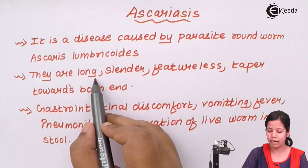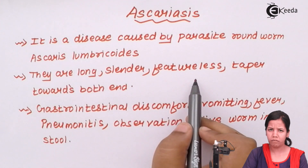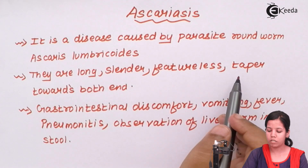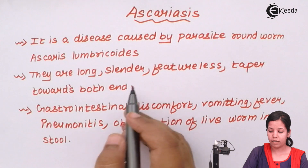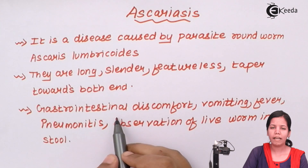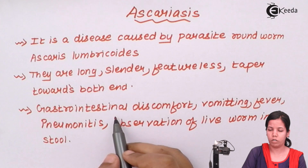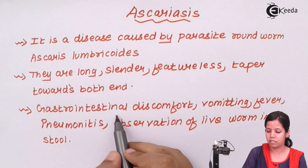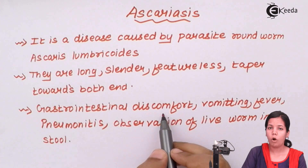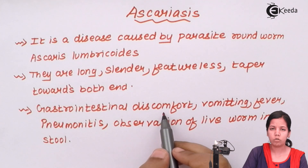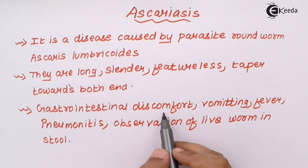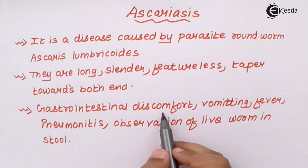These organisms are long, slender, without distinct features, and tapering towards both ends. Whenever you get an Ascaris infection, whether in young or adult individuals, the common symptoms include gastrointestinal discomfort — also termed gastroenteritis or gastrointestinal inflammation. There is a burning or itching sensation especially in the stomach cavity or the muscular wall.